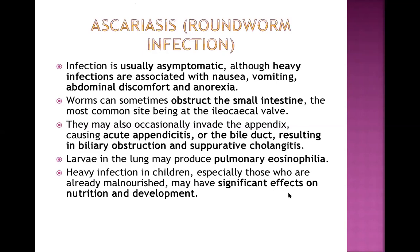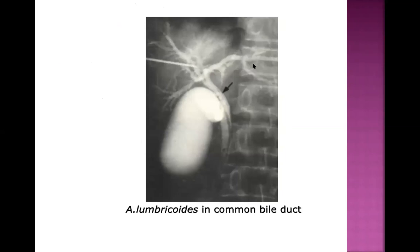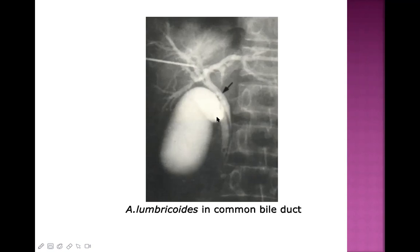Ascariasis is considered one of the main causes of malnutrition in developing countries. Looking at this imaging picture — dye has been given, this is the gallbladder and this is the bile duct. There is a filling defect inside the bile duct caused by a long worm, confirmed as Ascaris lumbricoides. You can clearly see the filling defect in the common bile duct, which is very near to the gallbladder.